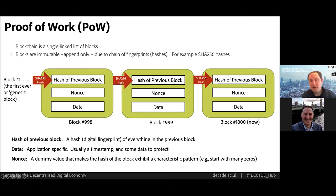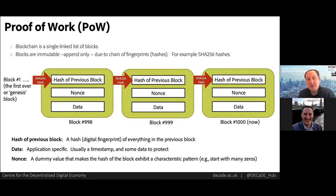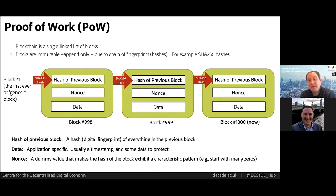This chain structure provides data integrity: if we manipulate data part way along the chain, we'd need to recompute all the hashes from that point to the end to restore integrity. This is made very difficult by the nonce inside each block — a number chosen such that the hash of the block exhibits a characteristic pattern, like a certain number of leading zeros. Finding this nonce via exhaustive search is computationally expensive work called mining, and it is this cost that gives the DLT its integrity.